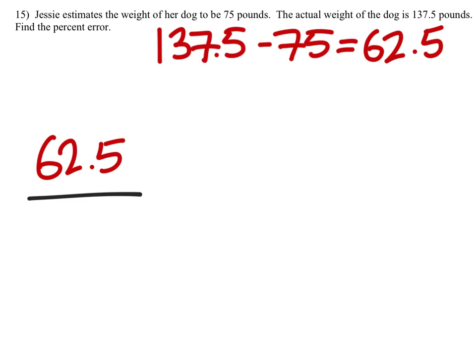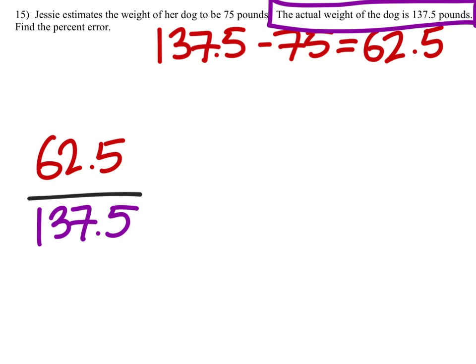The actual weight of the dog, told us in this sentence, was 137.5 pounds. So we will divide 62.5 by 137.5.